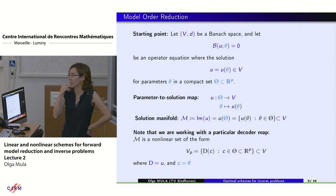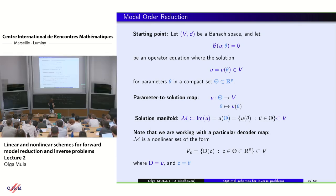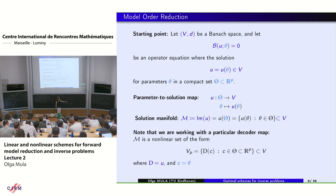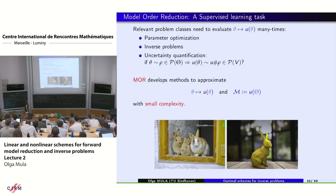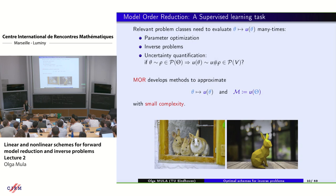The manifold can be understood as a decoder map itself: if we take C as the parameters and the decoder as the mapping U from parameter to solution, we get a nonlinear set of dimension P, the number of parameters. However, we don't want to use this decoder because even with a reduced number of parameters, going from the parameter to the solution may be really costly. Relevant problem classes requiring many evaluations of U of theta include parameter optimization, inverse problems, and uncertainty quantification.